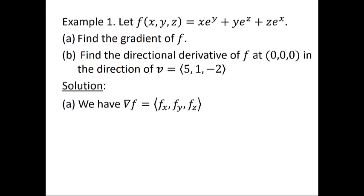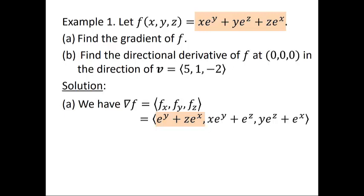We write down our formula for the gradient of f — the vector whose components are the partial derivatives. Since f is a function of x, y, and z, the gradient has three components. The partial derivative with respect to x is e^y + ze^x. The partial derivative with respect to y is xe^y + e^z. The partial derivative with respect to z is ye^z + e^x.